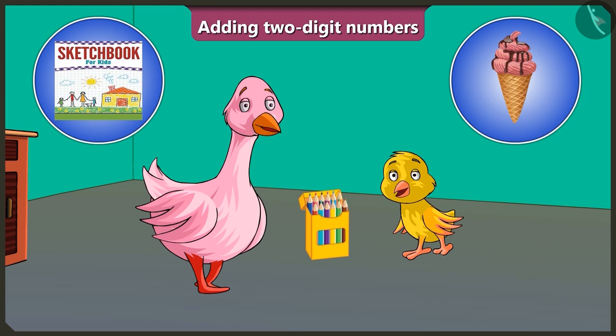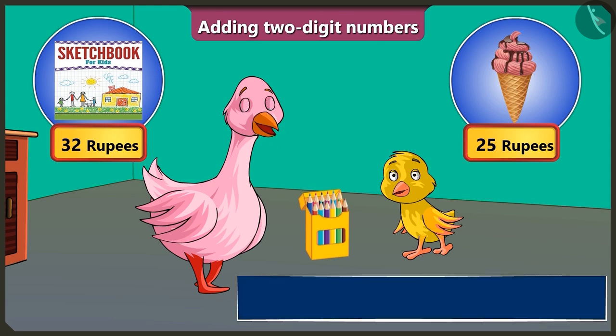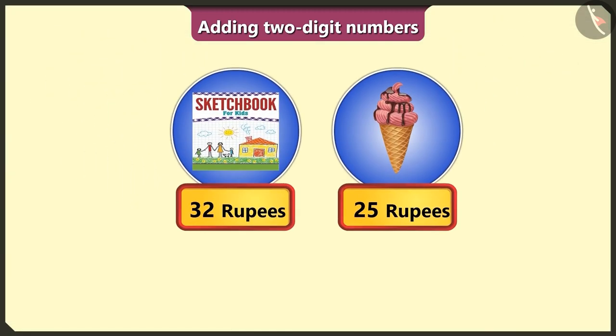Hmm, 32 rupees for the sketchbook and 25 rupees for the ice cream. Hey, Pillu, but how much money do I have to give in total? For this, we have to add 32 and 25.